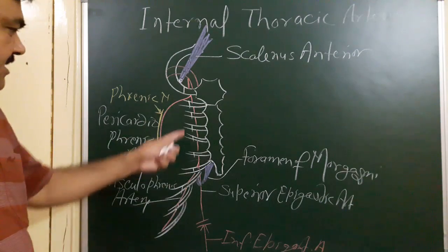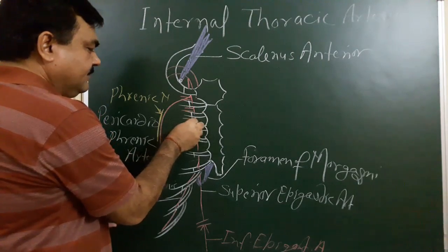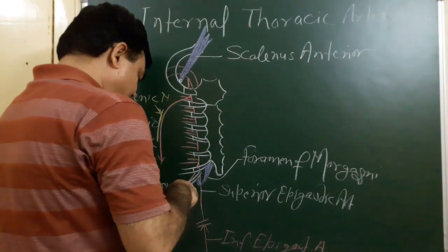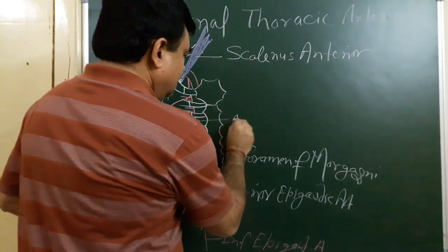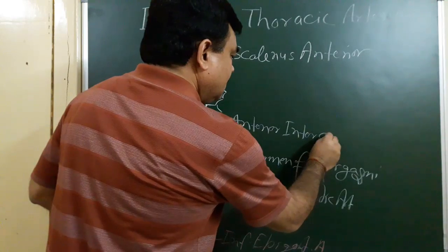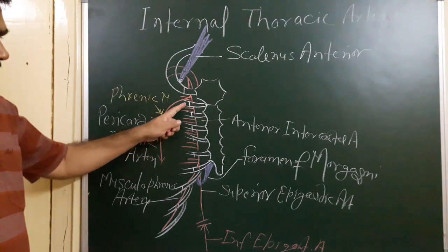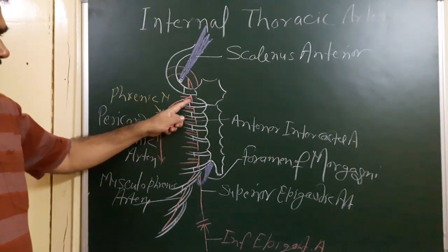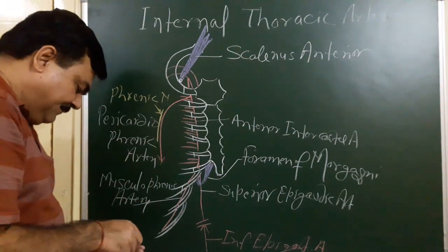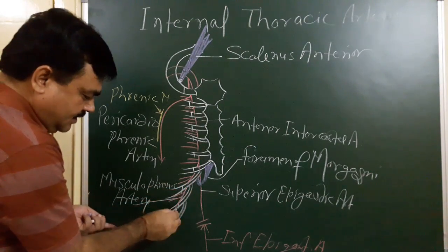In each intercostal space, the internal thoracic artery gives two anterior intercostal arteries. These two anterior intercostal arteries arise in each space — first, second, third, fourth, fifth, and sixth spaces.